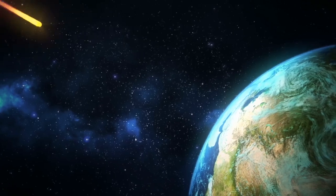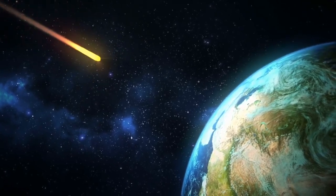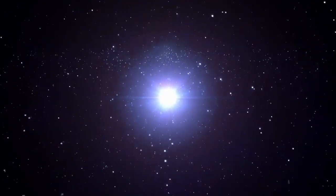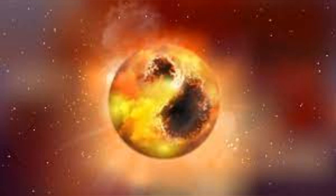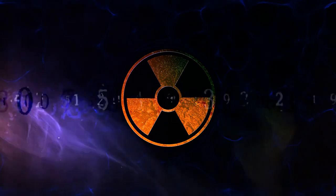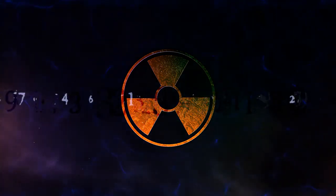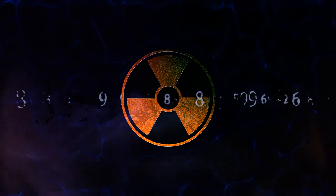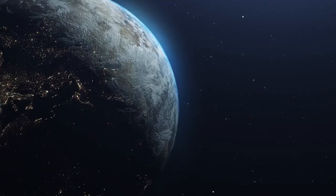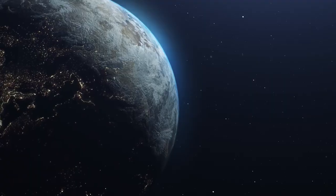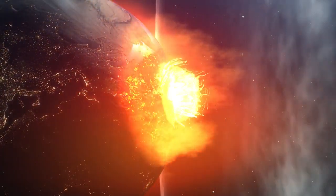If Betelgeuse were to explode today, the impact on Earth could be significant. The explosion would release a massive amount of radiation, including gamma rays, x-rays, and cosmic rays. While Earth's atmosphere would protect us from most of this radiation, there could still be consequences. Radiation could damage DNA and cellular structures, potentially leading to an increase in cancer rates and other health issues. But scientists reassure us that the chances of this radiation reaching Earth are low, and our atmosphere is well-equipped to shield us from any harmful effects.